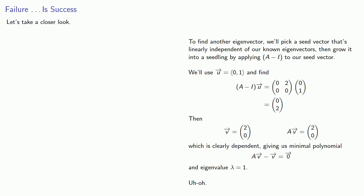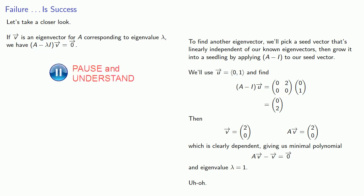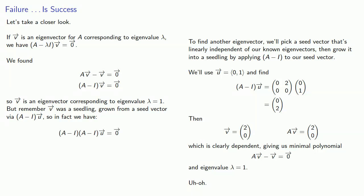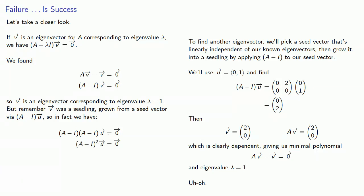Let's take a closer look at what happened. If v is an eigenvector for a matrix A corresponding to eigenvalue lambda, we have (A minus λI) applied to v gives us the zero vector. What we found is that Av minus v gives us the zero vector, or (A minus I)v gives us the zero vector — so v is an eigenvector corresponding to lambda equals 1. But this vector v was a seedling grown from a seed vector via (A minus I) applied to u, so in fact we have (A minus I) applied to (A minus I) applied to u, which we can rewrite as (A minus I)² applied to u equals the zero vector. This looks very similar to the eigenvalue equation.